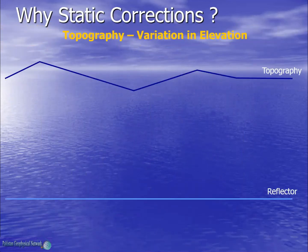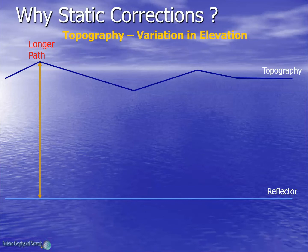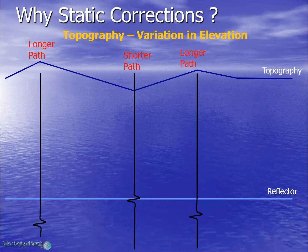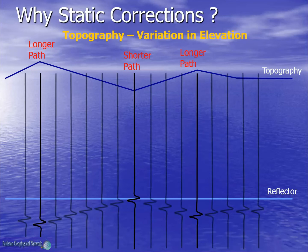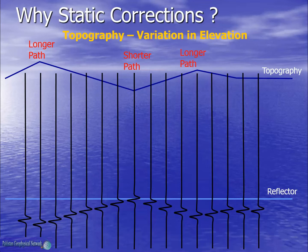Now let's forget the weathered layer and consider the topography or variation in elevation. Here we can see at this point we will have a larger ray path and reflected events will take more time to reach the surface. Similarly here we have a shorter path and reflected events will take less time. Here again the events will take more time. So these will be our reflected seismograms, and if we fill in between we get an inverted image of topography in the seismic section. Thus it is evident that we need to compute elevation statics to remove the effect of topography.